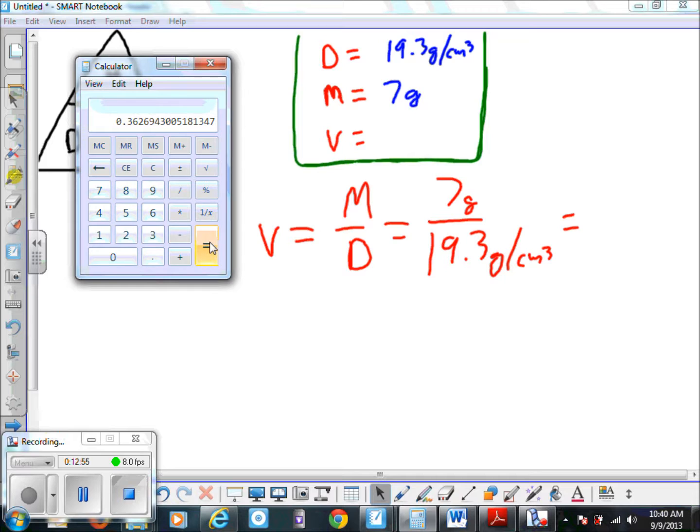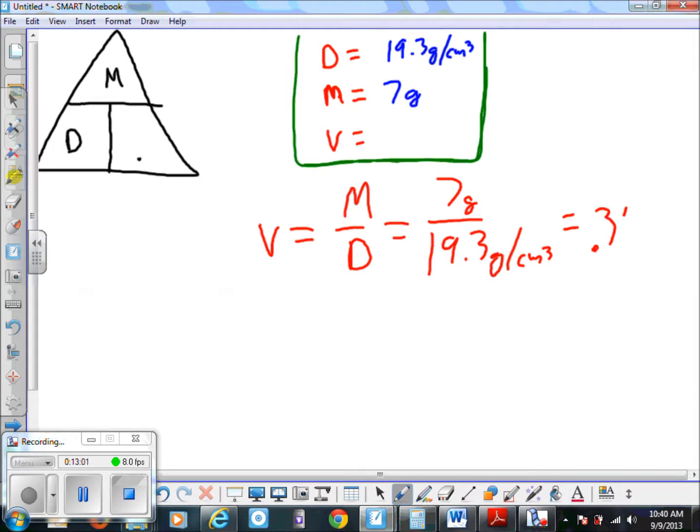So 0.3627 cubic centimeters. My label is kind of missing there, sorry about that. But there is the way that you find your volume, like in number four on the worksheet.